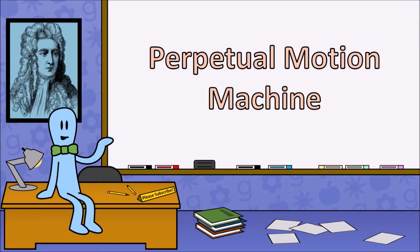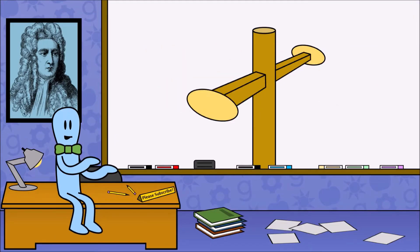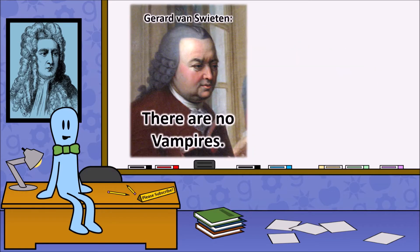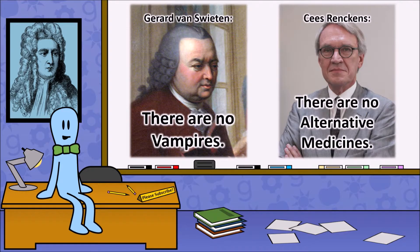A perpetual motion machine, as the name implies, is a device that will move forever without any additional input. This is an idea that was popular hundreds of years ago and still is to this day, and it's easy to see why.